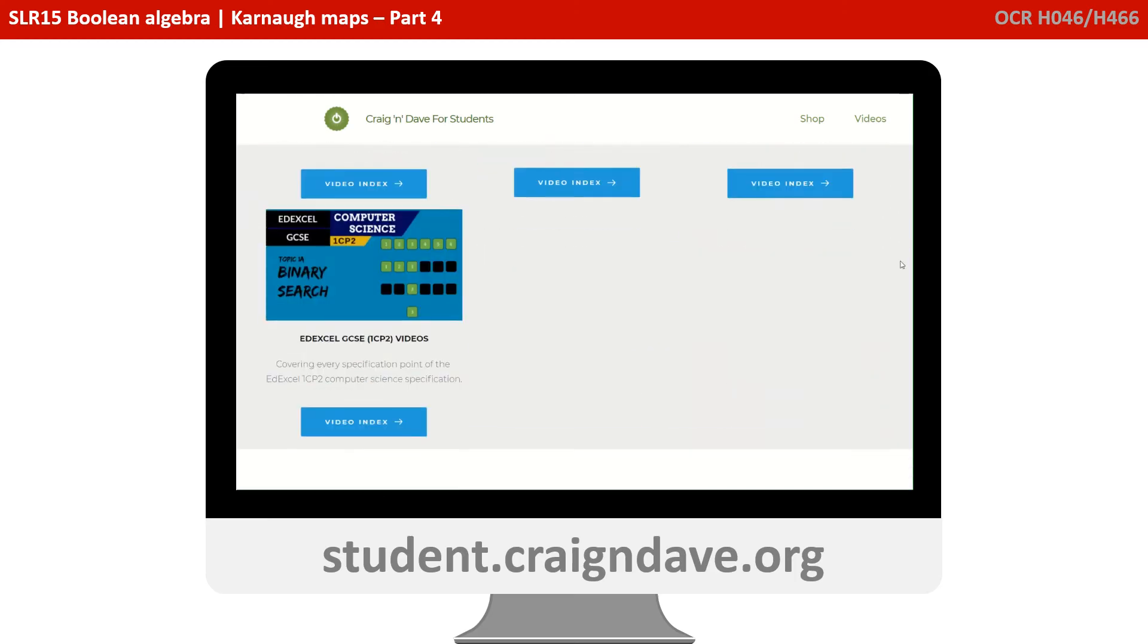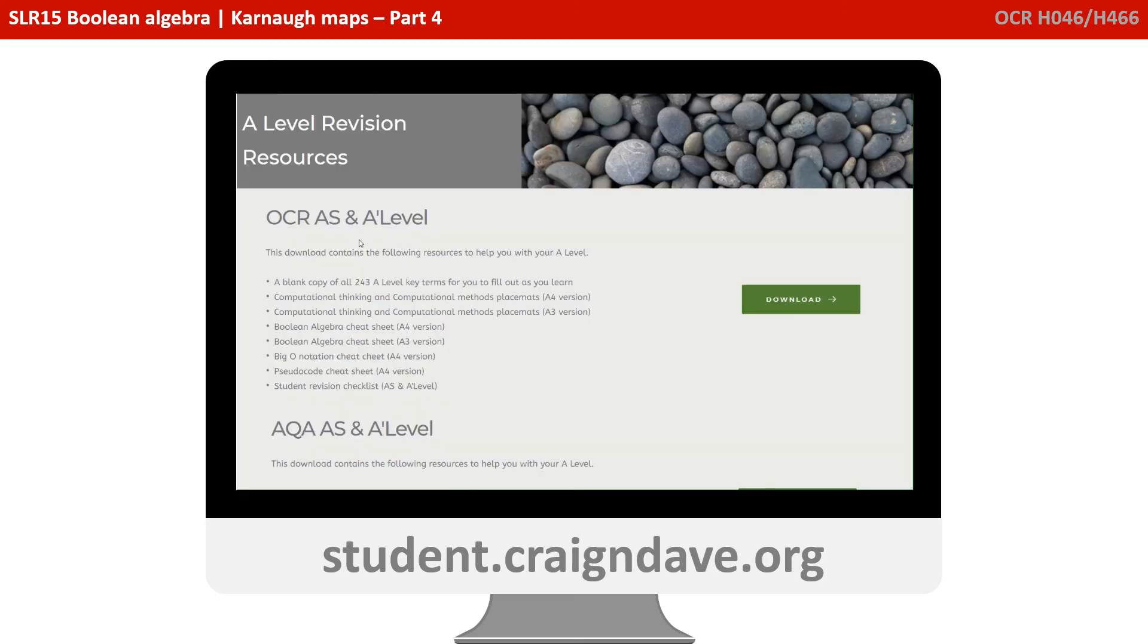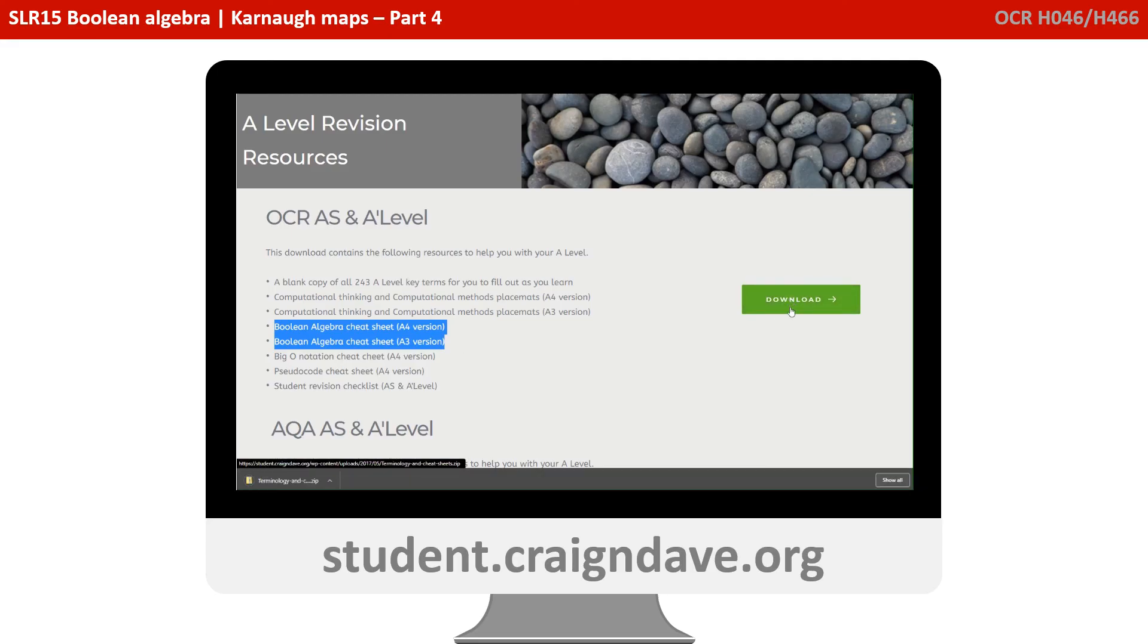You can find this over at student.craiganddave.org. Just scroll down to where it says A-level revision. If you select that, you will see OCR A-level revision, including a whole bunch of free resources, including these cheat sheets. You can click download, no subscription or logins required, and you'll get access to this cheat sheet.